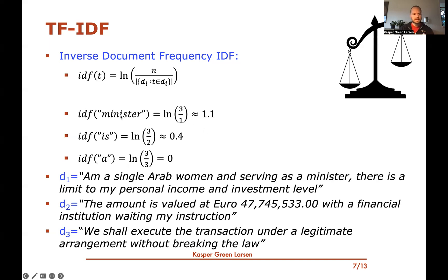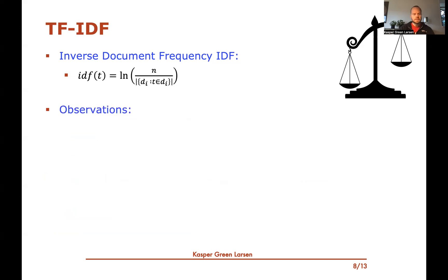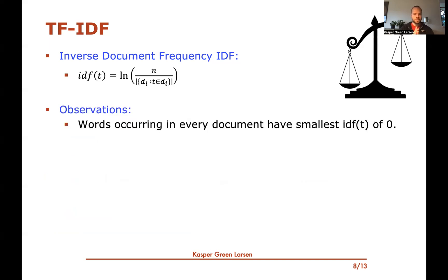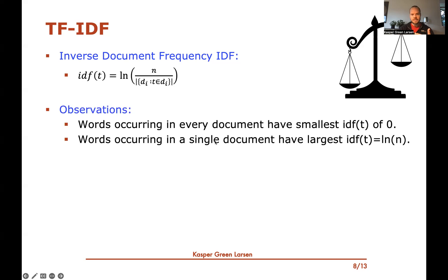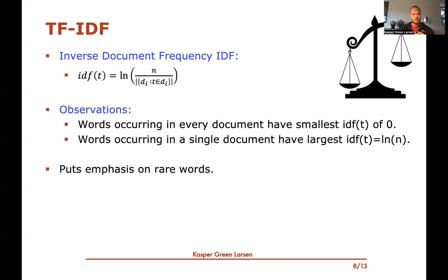The observation is that a word occurring in every single document gets IDF = log(N/N) = log(1) = 0 — the smallest possible value. The largest IDF occurs when a word appears in just one document: log(N/1) = log(N). So IDF puts emphasis on rare words — it's large when things occur rarely and smallest when they occur in most documents. This makes sense if you want to weigh terms based on how rare they are. This seems like a natural parameter.